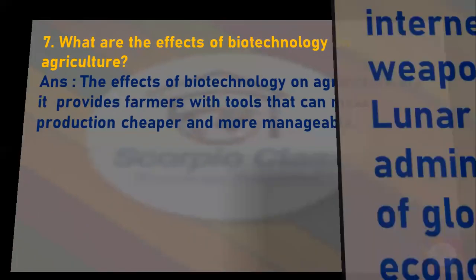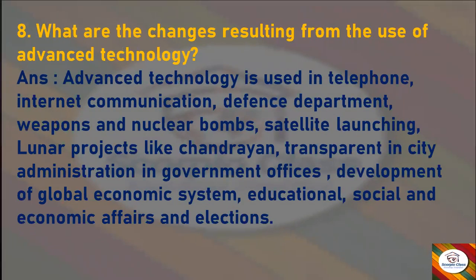Next question: What are the changes resulting from the use of advanced technology? Answer: Advanced technology is used in telephone and internet communication, the defense department for weapons and nuclear bombs, satellite launching and lunar projects like Chandrayaan, transparency in city administration and government offices, development of the global economic system, and in educational, social, economic affairs and elections. These are the uses of advanced technology.